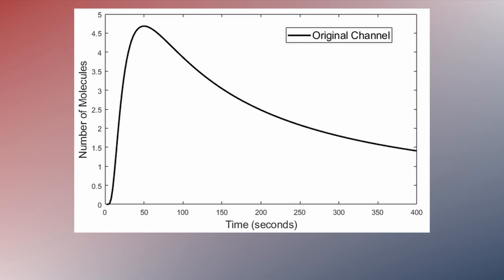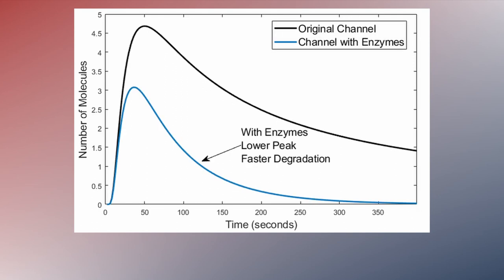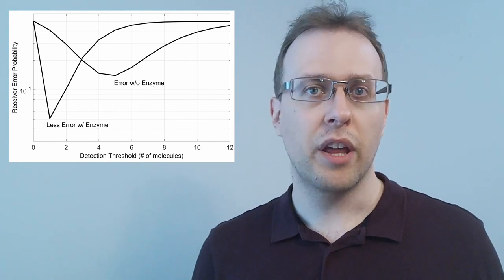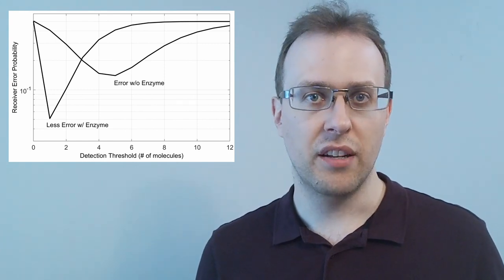We were inspired by this natural breakdown process to design an artificial communication system. We showed how the enzymes change the communication channel between a transmitter and receiver. We used a simple receiver design to calculate the error probability, then measured how having enzymes lowers the error probability without making the receiver more complicated — which is a great benefit. We also recreated our results with molecule simulations. When I think about the paper we published in 2014, I always picture solving this interference problem by using a broom to sweep away old molecules and clean up the channel.